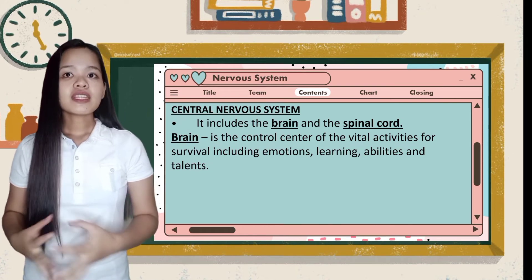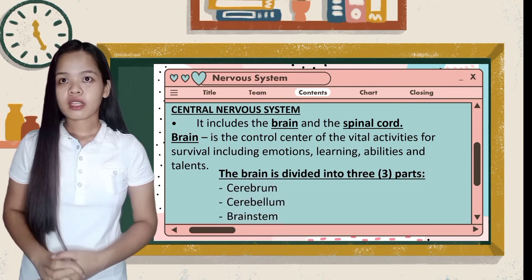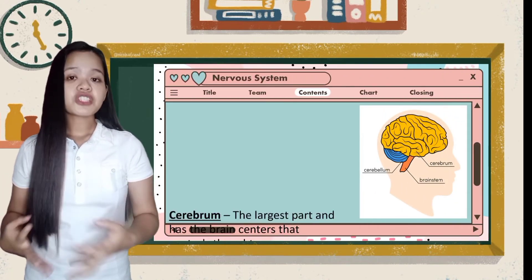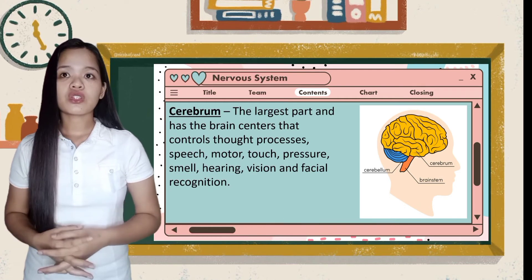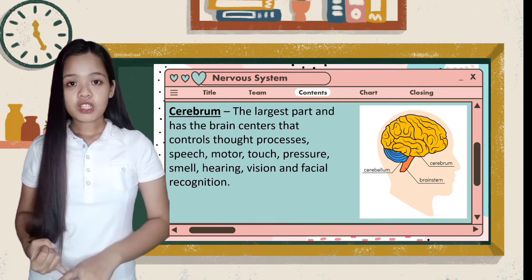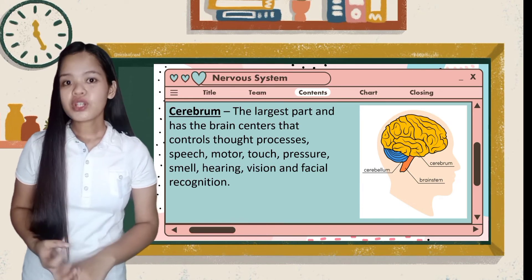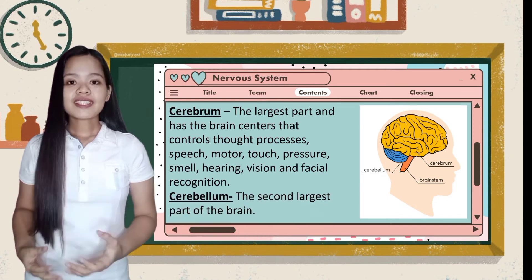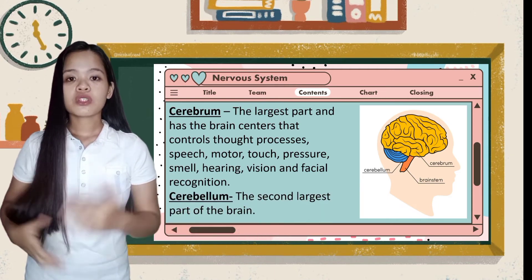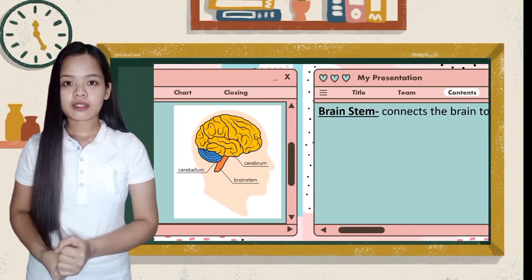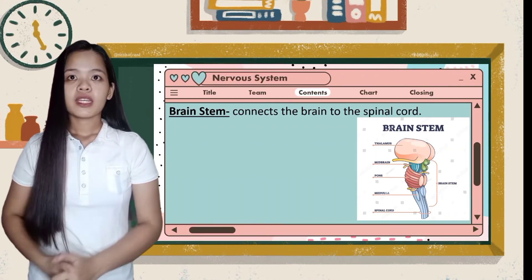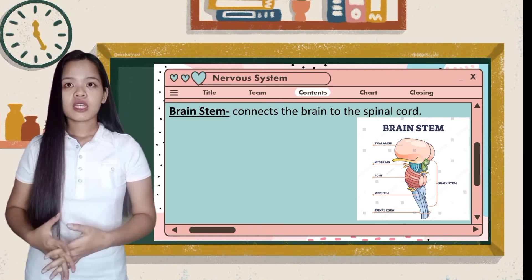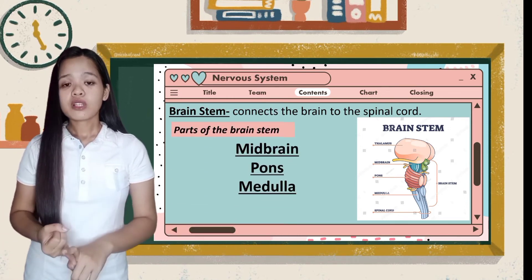The central nervous system includes the brain and the spinal cord. The brain is the control center of vital activities for survival including emotions, learning, abilities, and talents. It is divided into three parts: the cerebrum, cerebellum, and the brainstem. The cerebrum is the largest part and has brain centers that control thought processes, speech, motor, touch, pressure, smell, hearing, vision, and facial recognition. The cerebellum is the second largest part of the brain. The brainstem connects the brain to the spinal cord and has parts: the midbrain, pons, and the medulla.